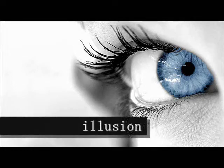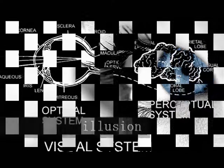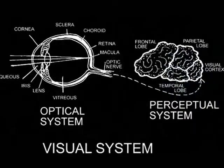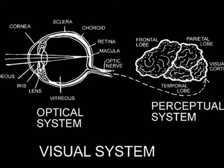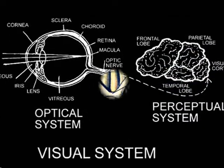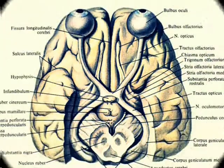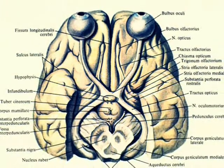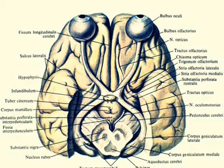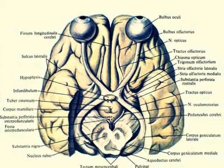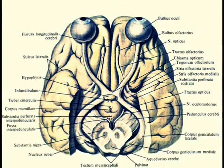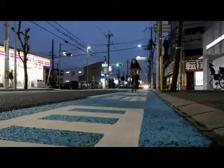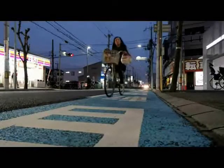An illusion is a proof that what you think you see is due to the way your brain and your entire visual system perceive an image. Visual illusions occur due to the properties of visual areas of the brain as they receive and process information.